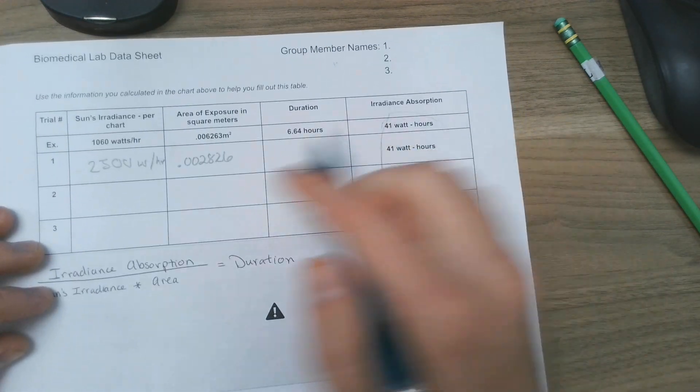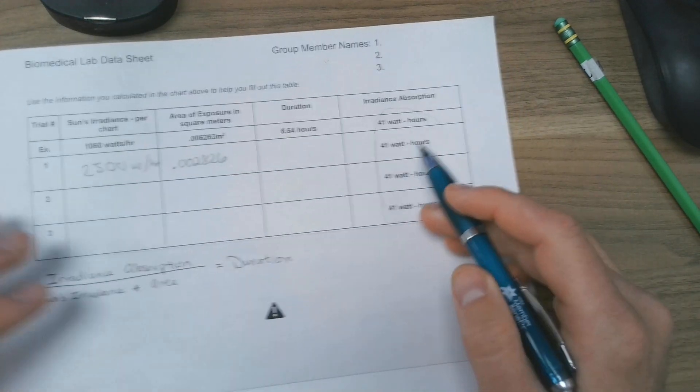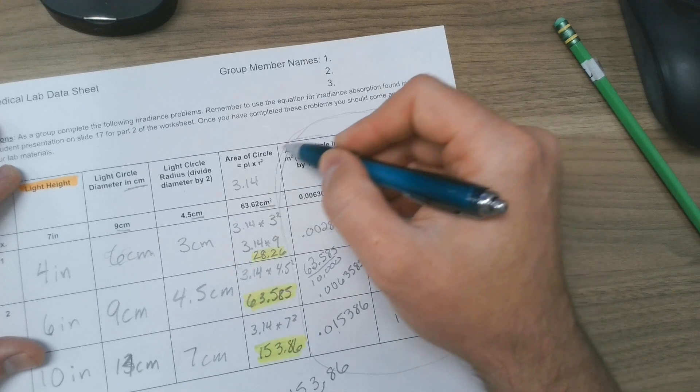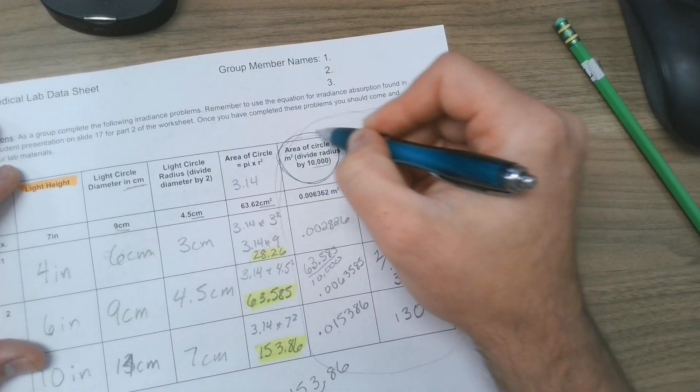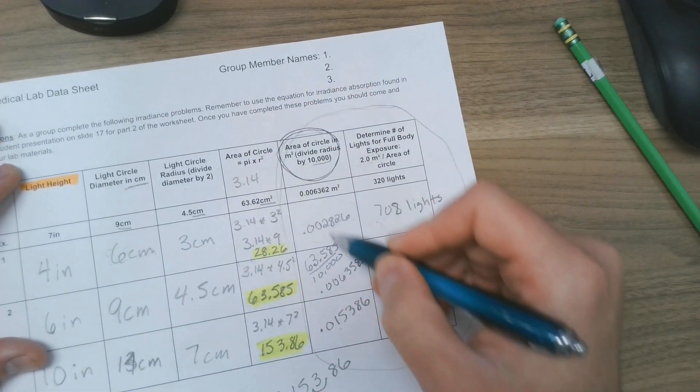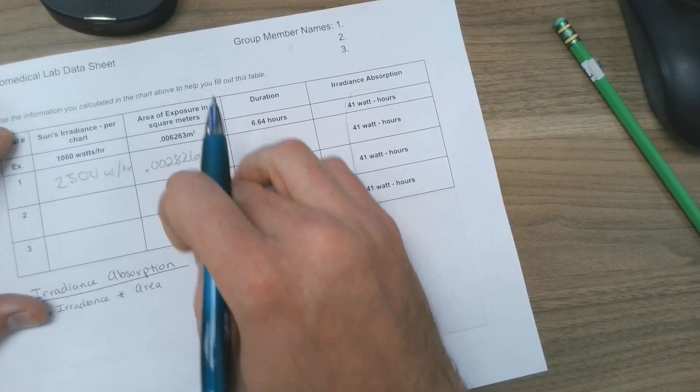Okay, the area of exposure in square meters, you've already done that. That is right here. Area of the circle. This is our area of exposure. So these numbers here are just getting copied and pasted in this column here.